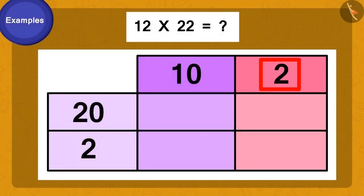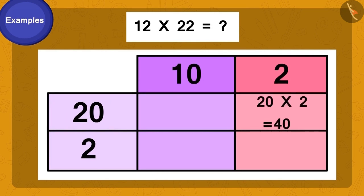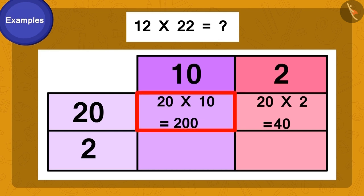Now, we first multiply the two of twelve by twenty of twenty-two. Twenty times two is forty. We will write this answer here. Now, we multiply ten by twenty. Twenty times ten is two hundred. We will write this answer here.